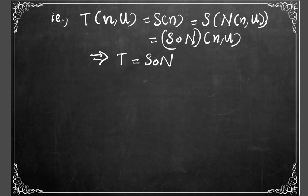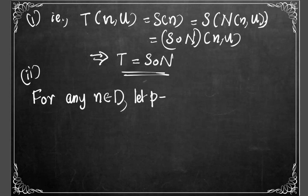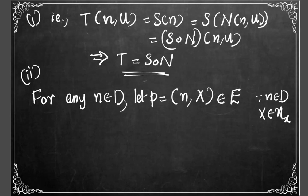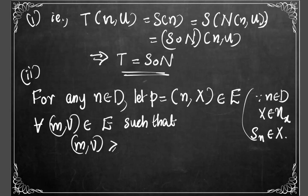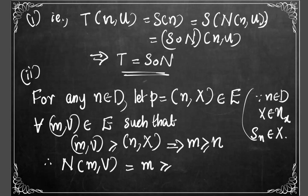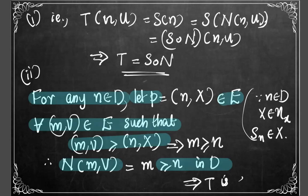From the definition of t, t(n, U) = s∘N(n, U), so t = s∘N as required. Also, for any n ∈ D, let p = (n, X). Since n ∈ D, X is a neighborhood of x, and s(n) ∈ X obviously, the ordered pair (n, X) belongs to E. For every (m, V) ∈ E such that (m, V) follows (n, X), m will follow n, and so N(m, V) = m will follow n. These two conditions imply that t is a subnet of s.